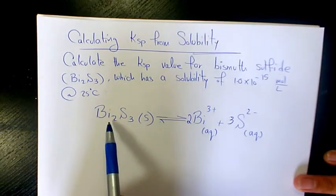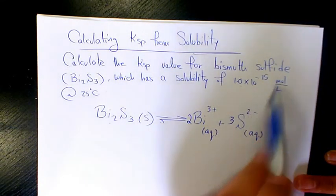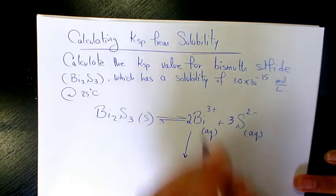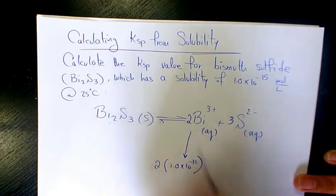So solubility of this compound is 1.0 times 10 to the power of negative 15. It means that after you dissolve it, we're going to produce two times 1.0 times 10 to the power of negative 15 of